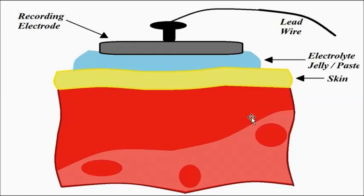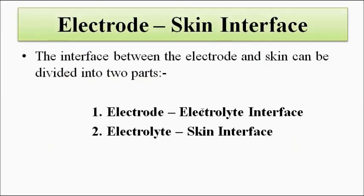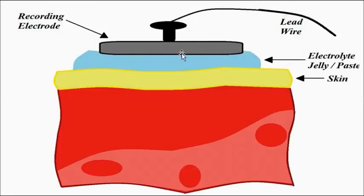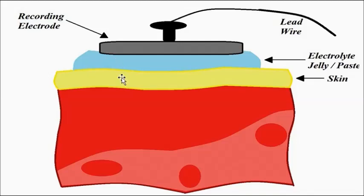This is the pictorial representation of the electrode skin interface. The electrode is shown, and the blue element represents the electrode paste or jelly, which is normally used to achieve firm adhesion. This is the upper layer of the skin. The contact junction between the electrode and the skin, separated by the electrode jelly, is collectively called the electrode skin interface. This can be divided into two parts: the electrode-electrolyte interface, and the electrolyte-skin interface.